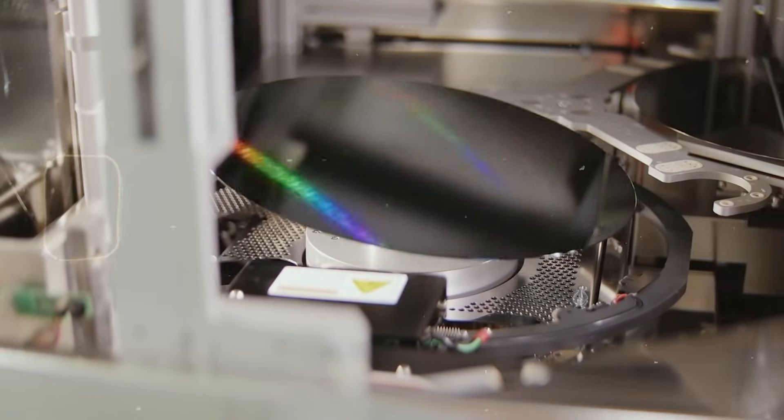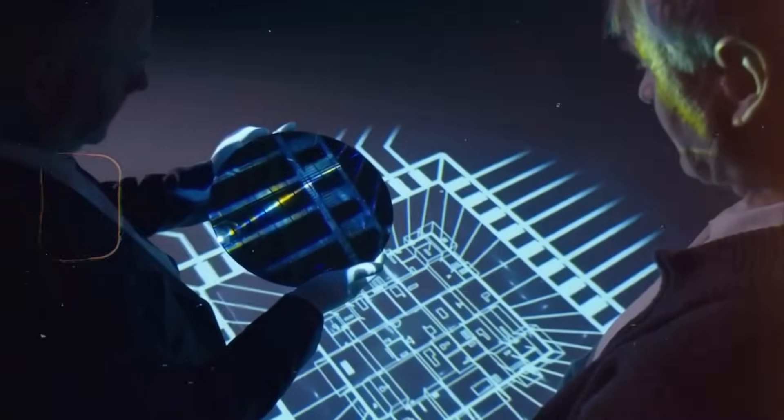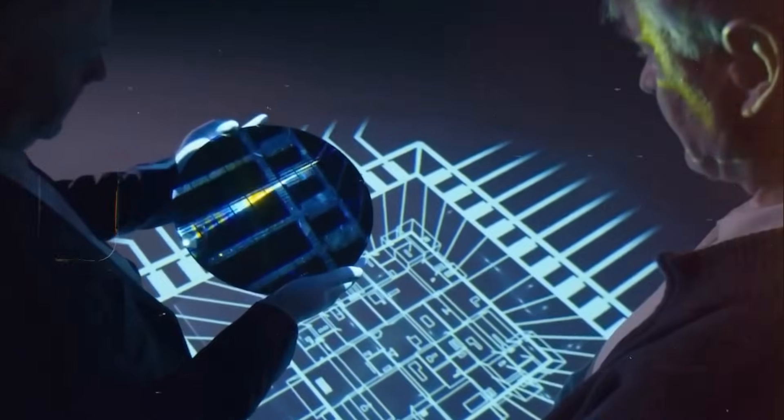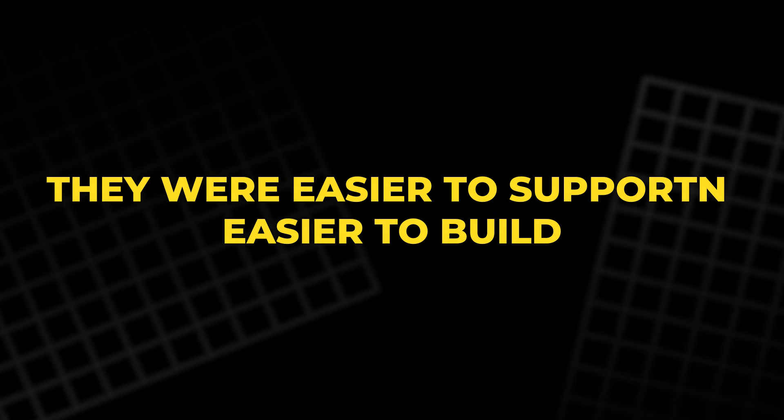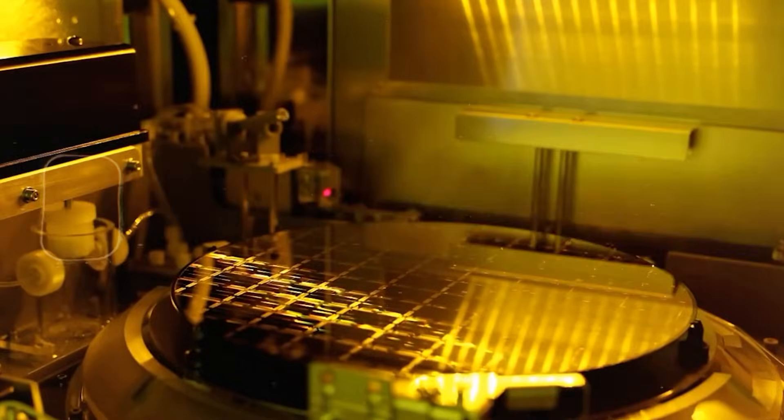It led to the invention of the gate-all-around transistor. Instead of one tall fin, engineers stacked thin sheets horizontally. They were easier to support, easier to build, and they solved the mechanical failures that were killing FinFET.